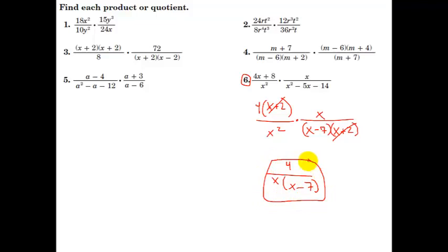So here's our answer, our reduced simplified answer. And then we want to remember to say x cannot equal 7, and x cannot equal negative 2. Okay, those are the excluded values. Here's our answer.